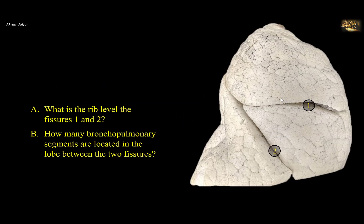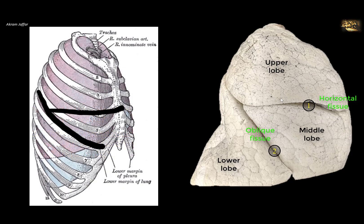What is the rib level of fissures 1 and 2? This is the right lung, which has three lobes and two fissures. The oblique fissure, number 2, divides the organ into upper and lower lobes. The horizontal fissure, number 1, passes from the anterior margin into the oblique fissure to separate the wedge-shaped middle lobe from the upper lobe. On the surface of the body, the oblique fissure starts at the level of the second thoracic spine posteriorly, follows the medial border of the scapula when the arm is abducted, then follows the sixth rib to reach the lower border of the lung at the sixth costochondral junction. The horizontal fissure extends from the anterior margin of the lung at the level of the fourth costal cartilage and follows the fourth rib to reach the oblique fissure.